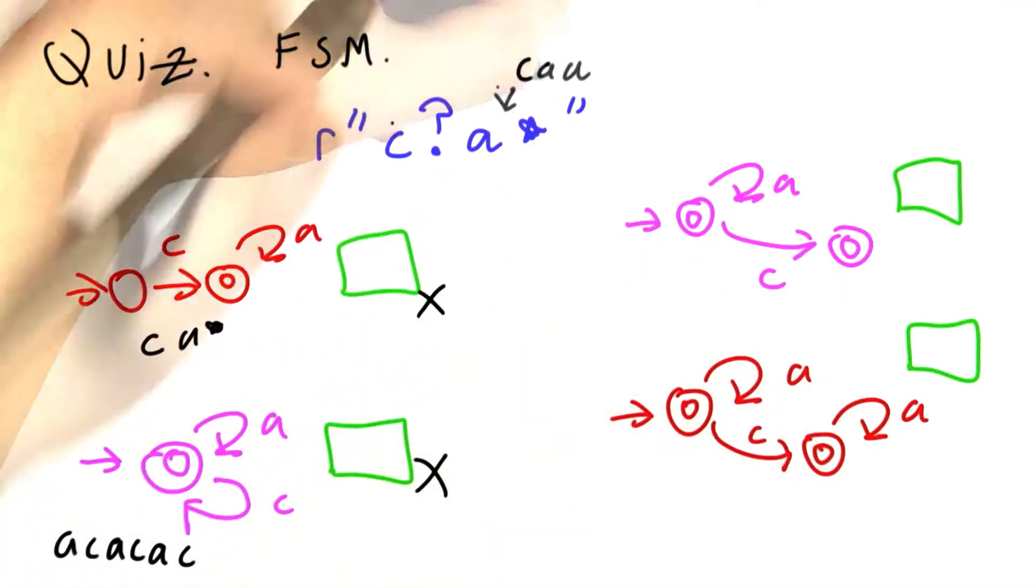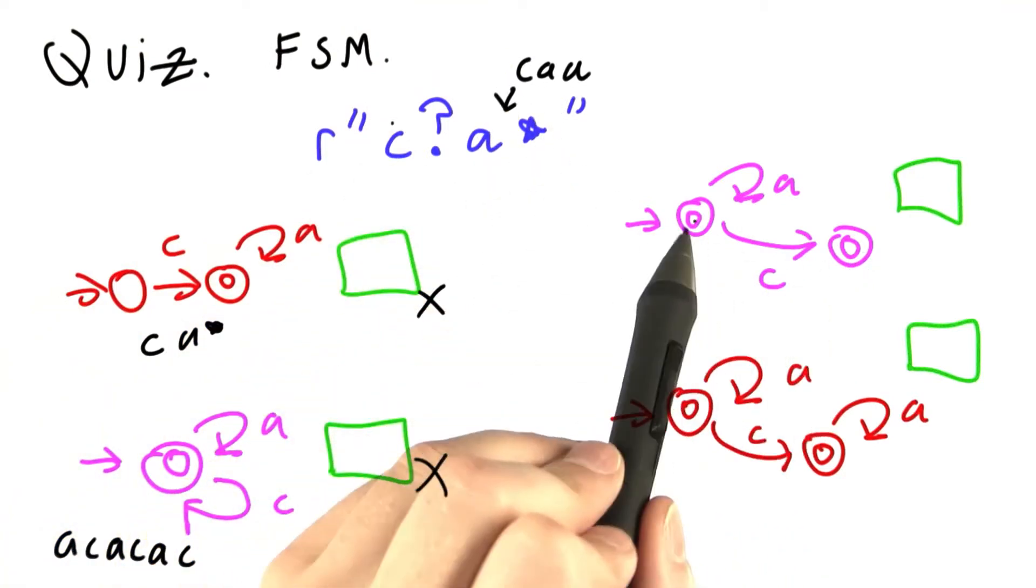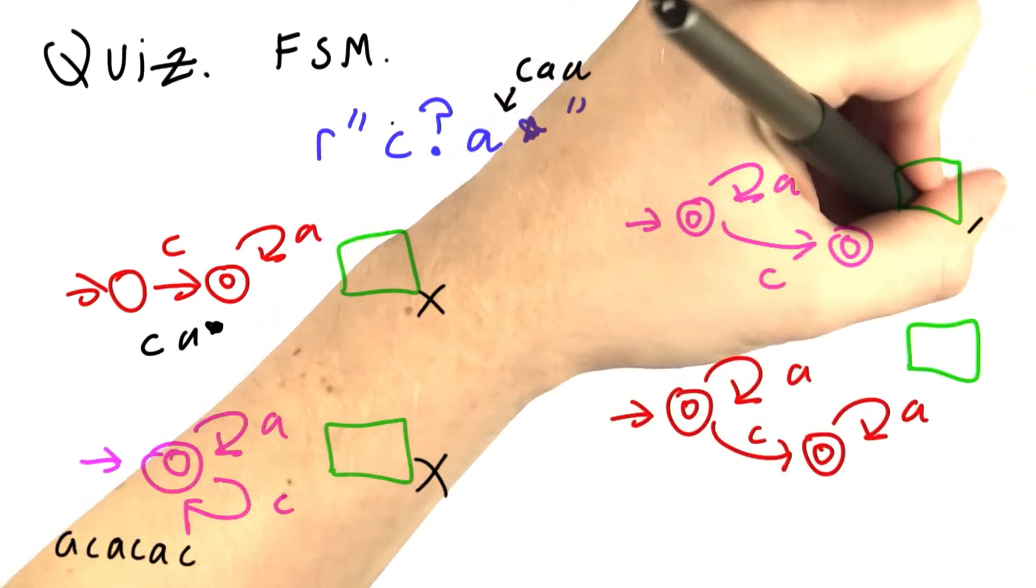But here's a string accepted by this first regular expression, c a a, that is not accepted by this machine. c, and then we'd fall off. So this is not a good bet.